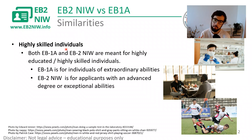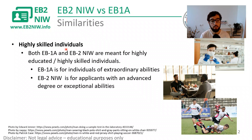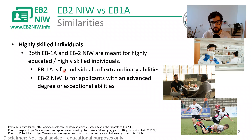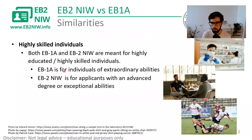Both EB2NIW and EB1A are for highly skilled individuals or professionals. As part of the requirements, you're supposed to have either an advanced degree or show that you are really well-positioned in your field. EB1A is for individuals of extraordinary ability, while EB2NIW is for applicants with an advanced degree — master's, PhD, or bachelor's plus five years — or those who can prove exceptional ability. USCIS considers exceptional and extraordinary two different things.